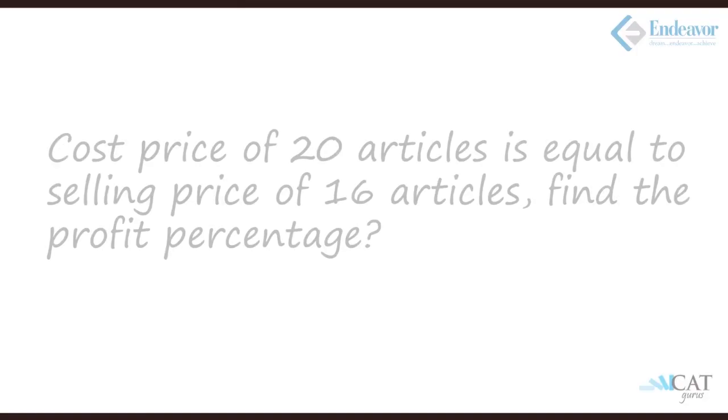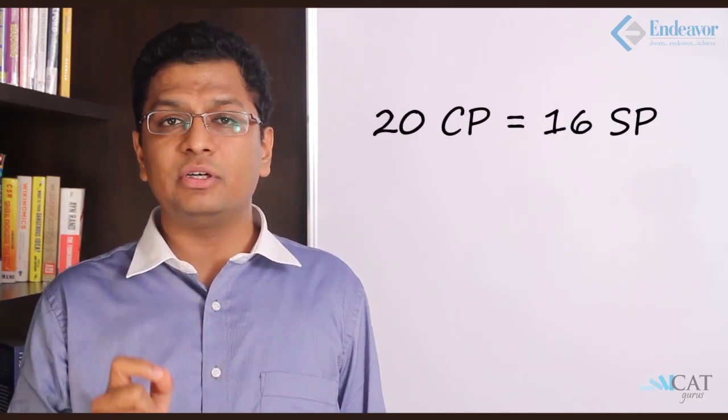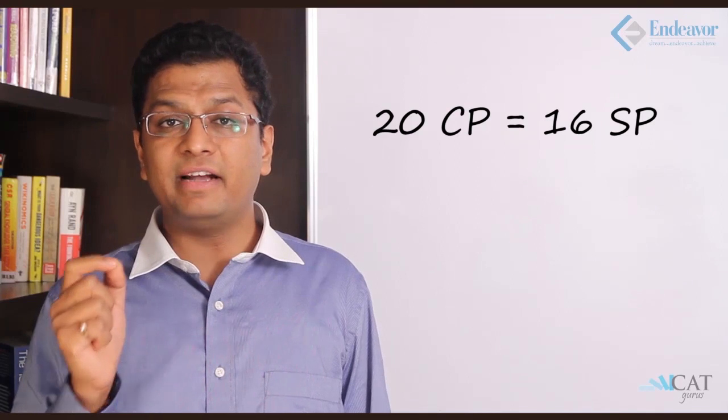Let's take another example. Cost of 20 articles equals the selling price of 16 articles. Find the percentage profit. Let's assume the cost price of one article is CP and selling price of one article is SP. So total cost price of 20 articles is 20 × CP, and total selling price of 16 articles is 16 × SP. Both are equal, so 20CP = 16SP.